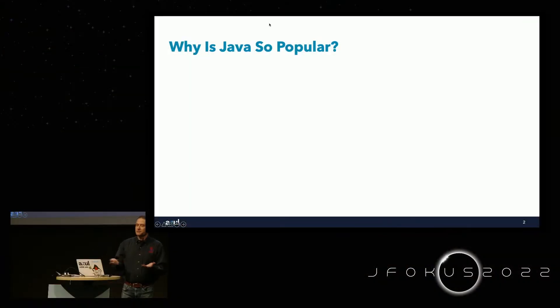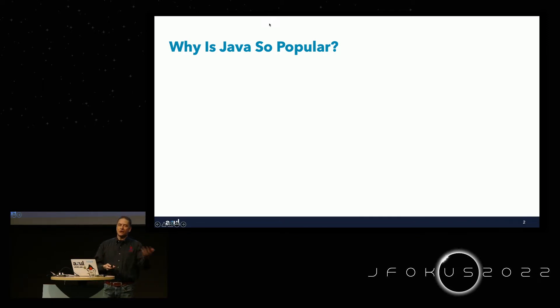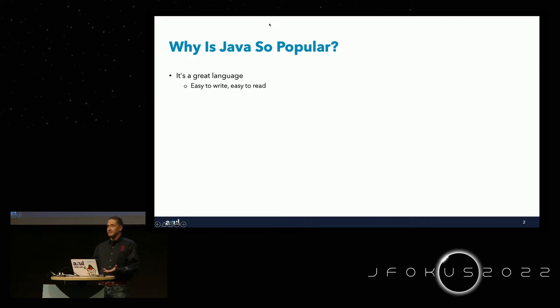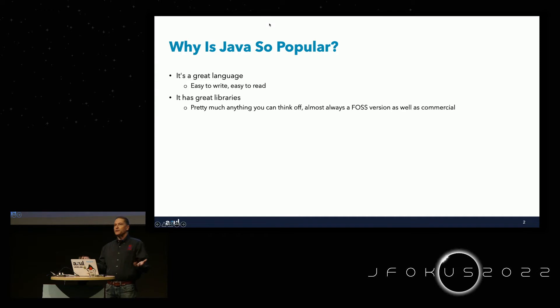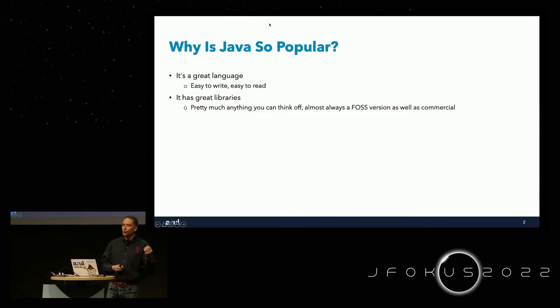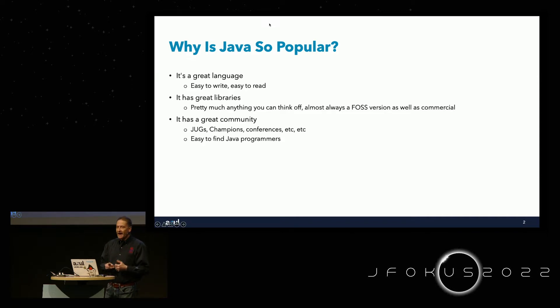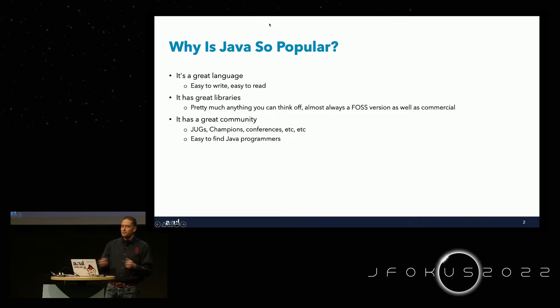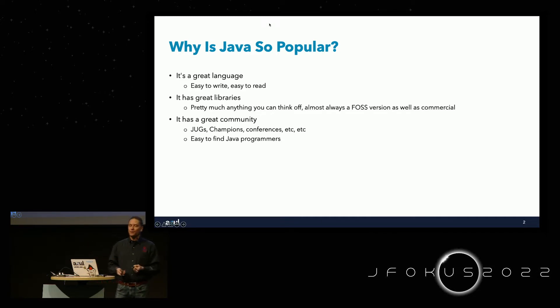The first thing to think about is why Java is so popular. Java is consistently one of the top three programming languages in surveys by TIOBE, RedMonk, and others. It's a great language — easy to write and, even more importantly, easy to read. We have a huge selection of libraries, both commercial and open source. There's a great community around Java, with user groups, Java Champions, and it's very easy to find Java programmers.